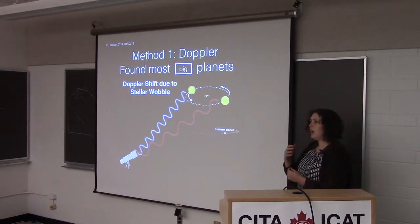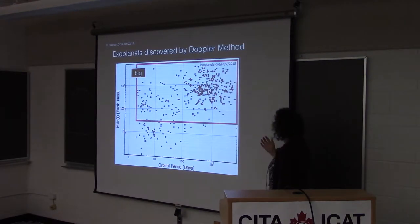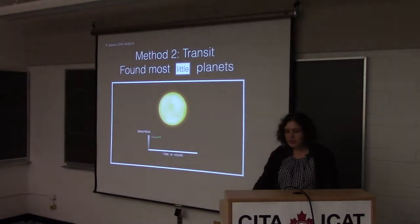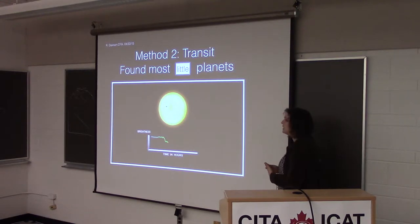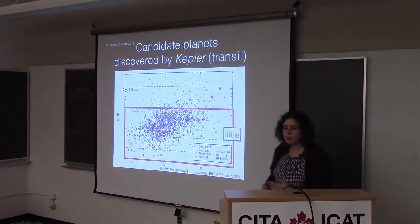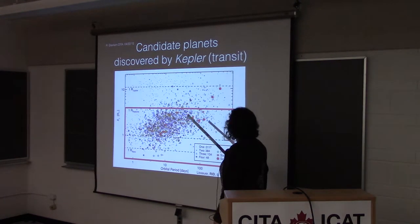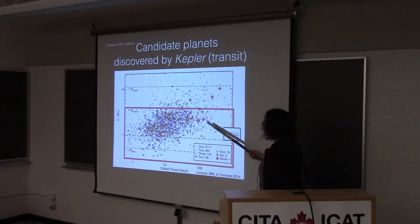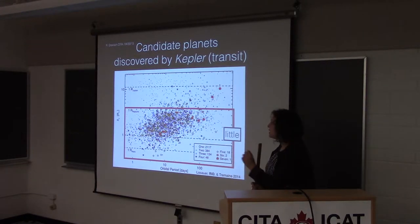For most planetary systems we don't have a picture like this, but the two most prolific approaches for discovering exoplanets have been sensitive to two different scales. The Doppler technique measures the reflex motion of the host star as it orbits the center of mass, and has mostly found big planets — giant planets with relatively long orbital periods. The transit technique measures the dimming in a star's light as a dark planet passes in front, and has found a lot of little planets, including Kepler mission candidates smaller than Neptune on short orbital periods.